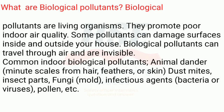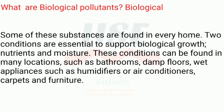What are biological pollutants? Biological pollutants are living organisms that promote poor indoor air quality. Some pollutants can damage surfaces inside and outside your house. Biological pollutants can travel through air and are invisible. Common indoor biological pollutants include animal dander — minute scales from hair, feathers, or skin — dust mites, insect parts, fungi, mold, infectious agents, bacteria, viruses, and pollen.